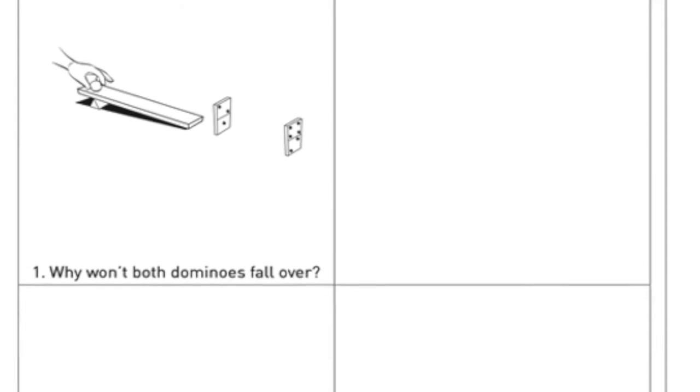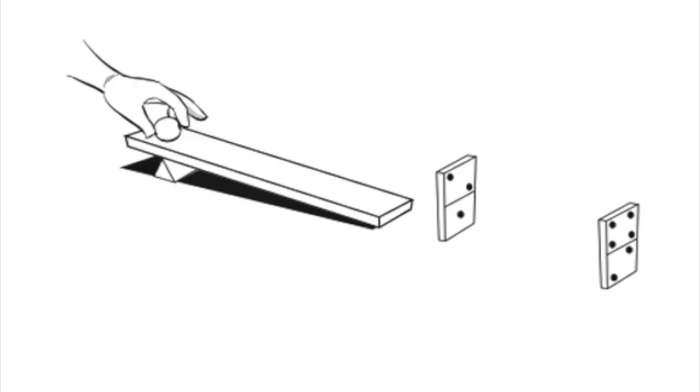Let's look at the first part of the worksheet together. When the hand lets go of the ball what do you think will happen? The ball will roll down the slope because it's tilted on an angle by the little wedge under there. When the ball reaches the end of the slope it will hit the first domino which will fall down. Is it close enough to the next domino to knock that one over as well?